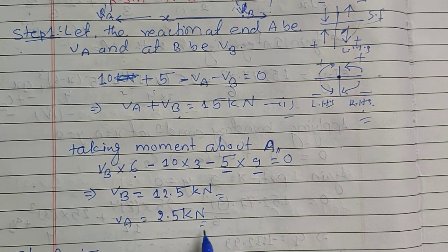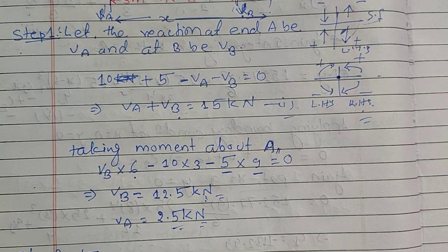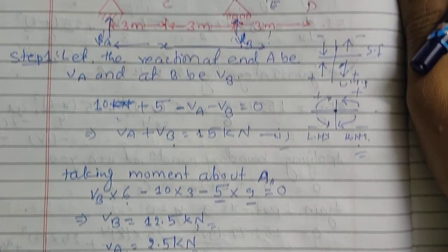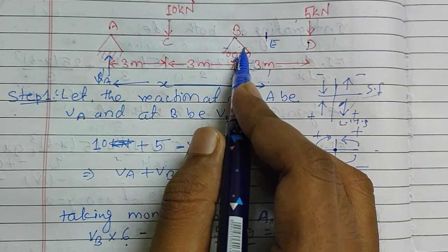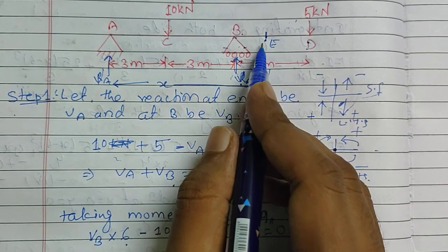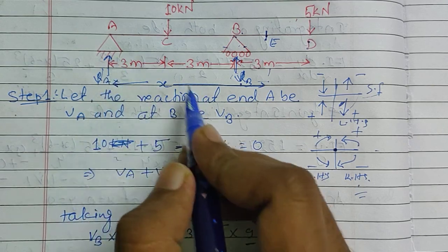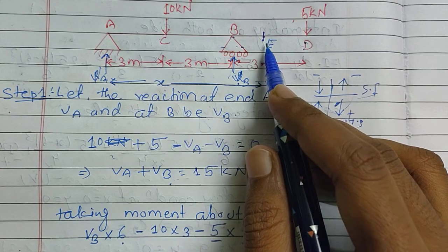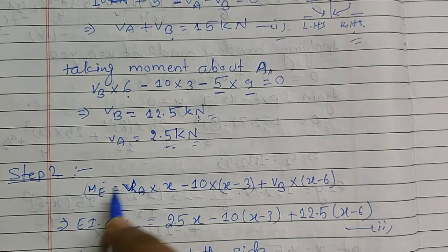Substituting VB into the earlier equation gives VA = 2.5 kN. In step two, we assume a point E which is in the overhanging portion, at distance x from point A. We then find the moment about point A at this general section E.